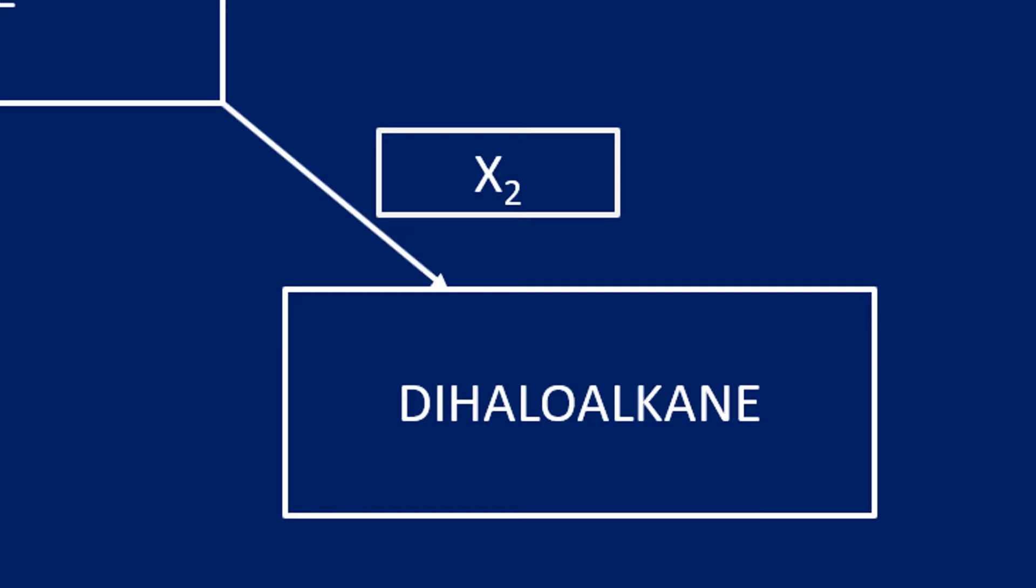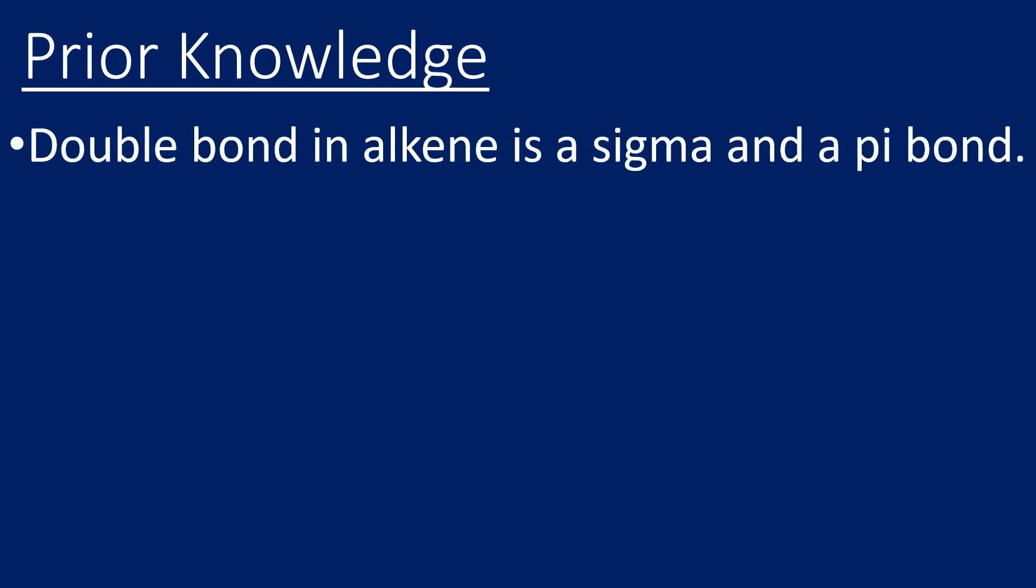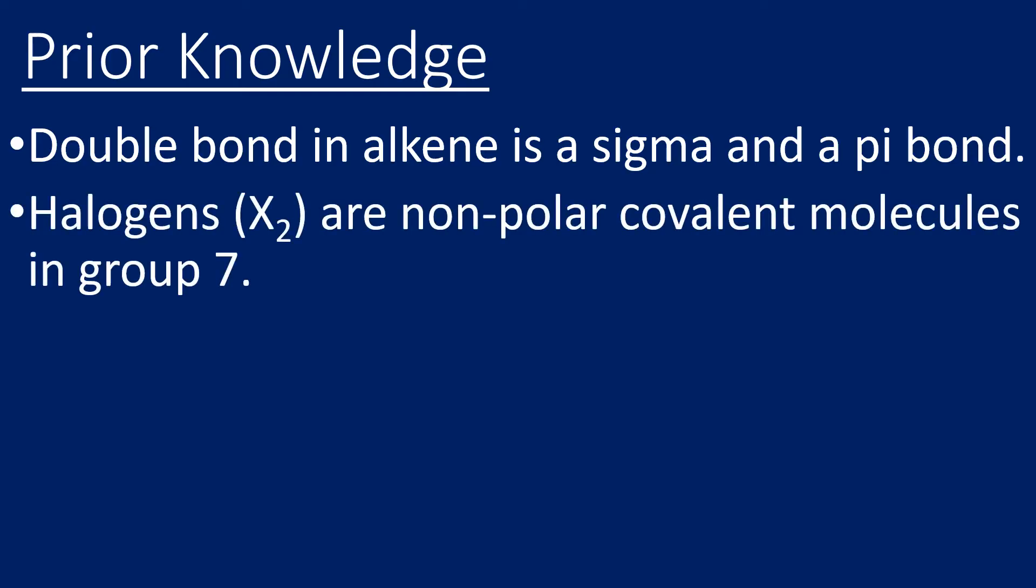The product of this reaction is going to be a dihaloalkane. So let's start with some prior knowledge. We do need to be aware that a double bond in an alkene is in fact a sigma and a pi bond. Halogens are diatomic non-polar molecules, basically anything from group seven. So fluorine F2 is classed as a halogen, chlorine, bromine, iodine. These are all non-polar diatomic molecules and they're all halogens.